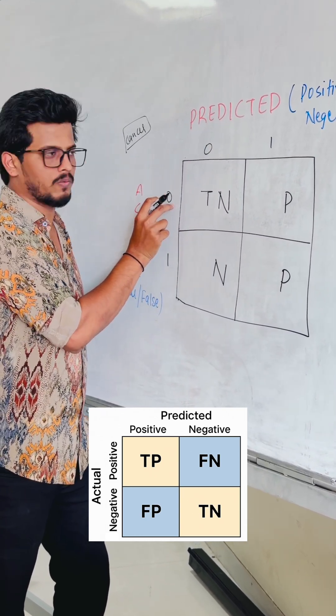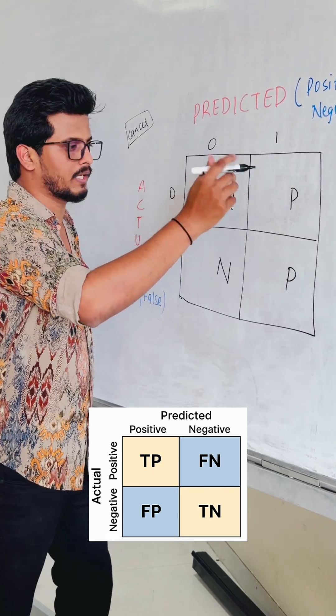Cancer is not, 0, and cancer is predicted. This means it is wrong, right? Hence, it is false.